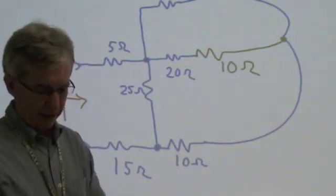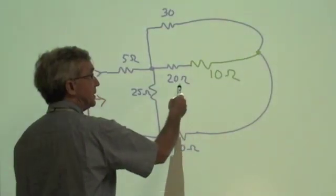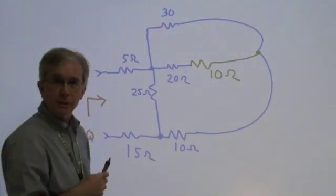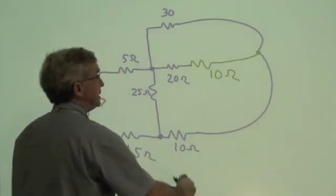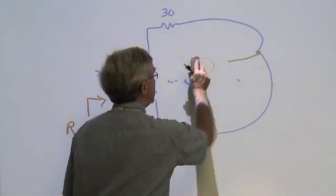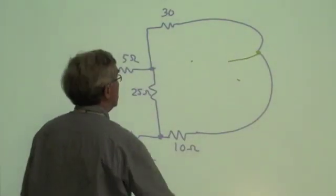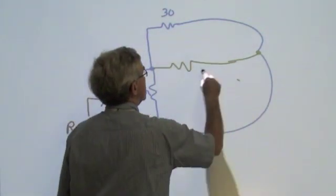Now, rather immediately, we see that 10 ohm resistor is in series with this 20 ohm resistor, so we can replace the 20 and 10 in series by one resistor, which is a 30 ohm resistor.